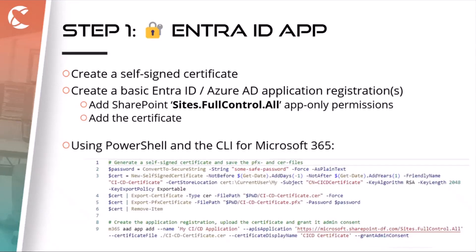We can do all this using a single short PowerShell script. The first part creates the self-signed certificate — on Windows you export it from the store to get a PFX and a CER file. On macOS you could use OpenSSL. Then I use the CLI for Microsoft 365 to create an application in the Azure AD tenant. I call it 'My CICD Application', assign it the correct application permissions (Sites.FullControl.All), connect the public key CER file to it, and grant consent — all in one command, provided you have sufficient permissions.